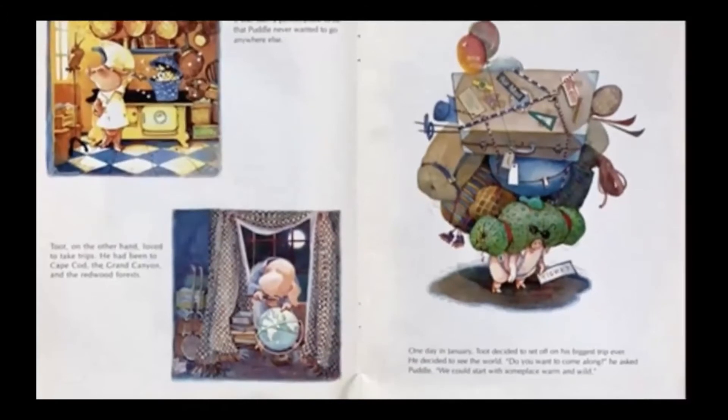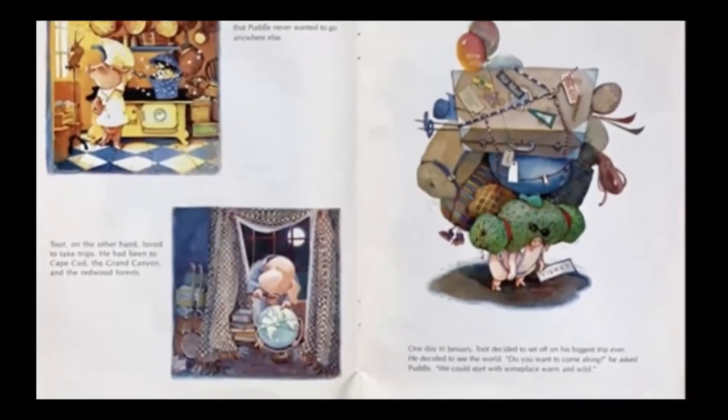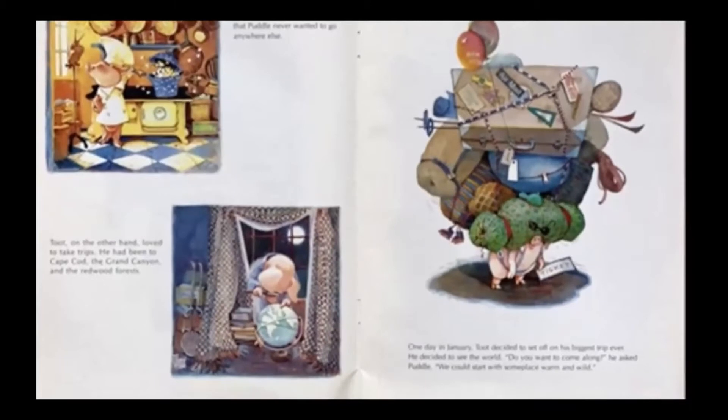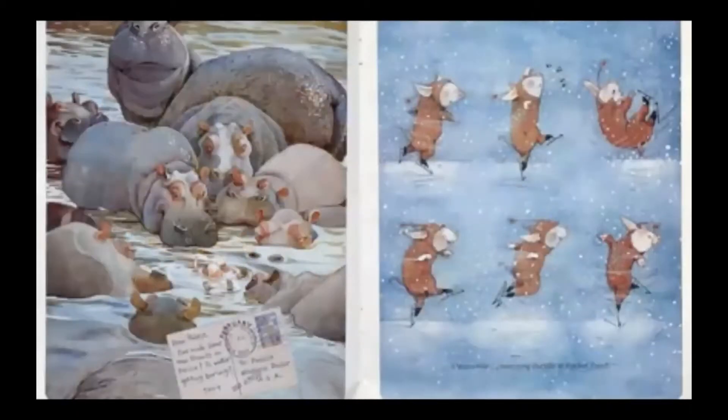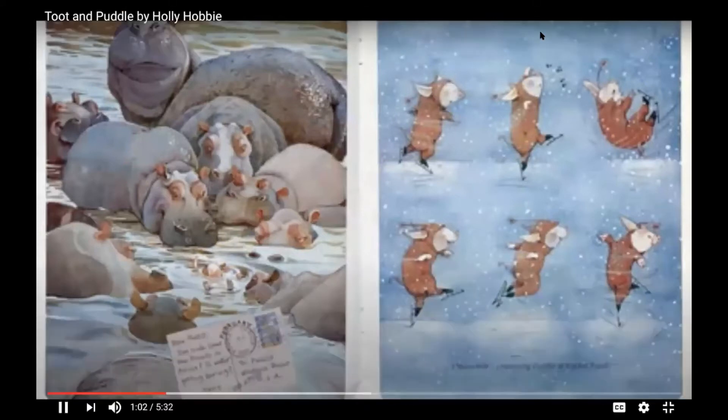Do you want to come along? He asked Puddle. We could start with someplace warm and wild. Puddle preferred to stay home. I love snow he thought. Dear Puddle, I've made some new friends in Africa. Is winter getting boring? Toot.